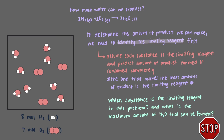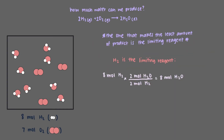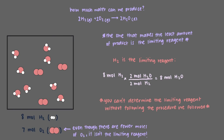So which substance is the limiting reagent in this problem, and what is the maximum amount of water that can be formed? Because hydrogen is the limiting reagent, the maximum amount of water that can form is 8 moles. The fact that we had fewer moles of oxygen at the beginning may make you think oxygen should be the limiting reagent, but it's not. You cannot determine the limiting reagent without following the proper procedure.